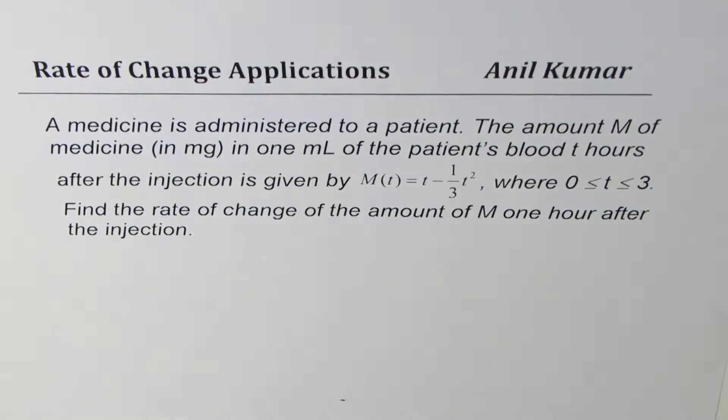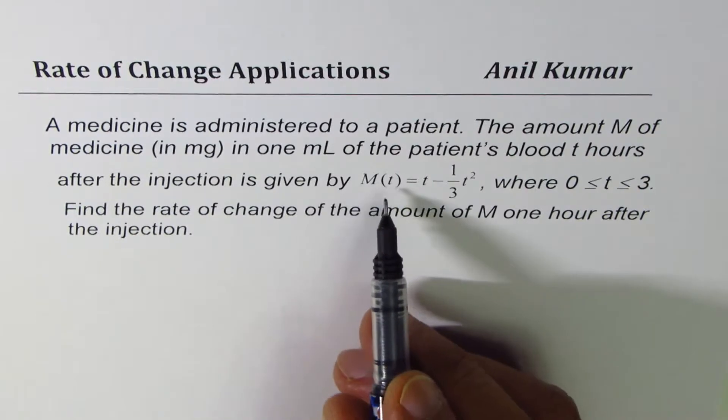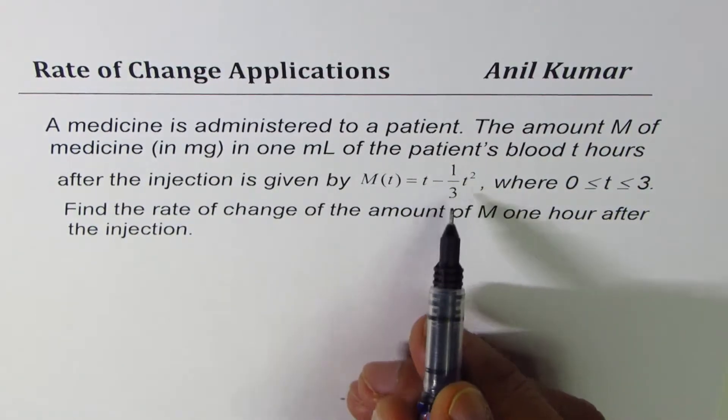The question here is: a medicine is administered to a patient. The amount M of medicine in milligrams in one milliliter of patient's blood t hours after injection is given by M(t) = t - 1/(3t²),